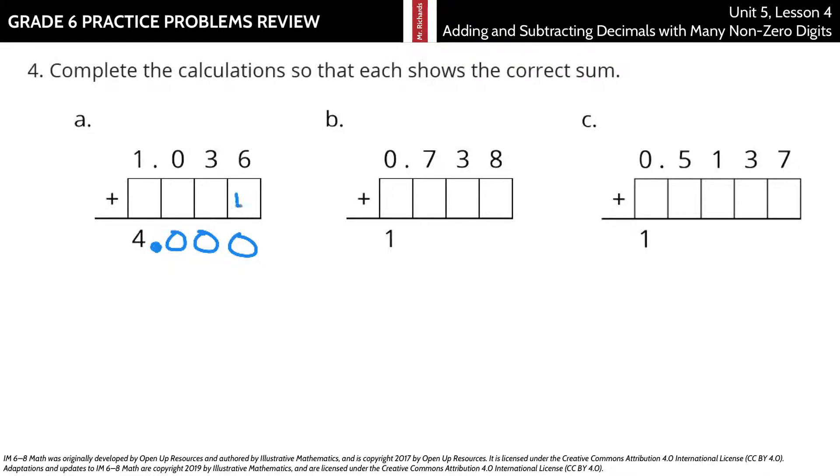And I would start with the right and go left. How do we get the six to be a zero? Well, we need to add four to it. Which then carries a one. So, now I'm at four. How do I get to that zero? I have to add six more.